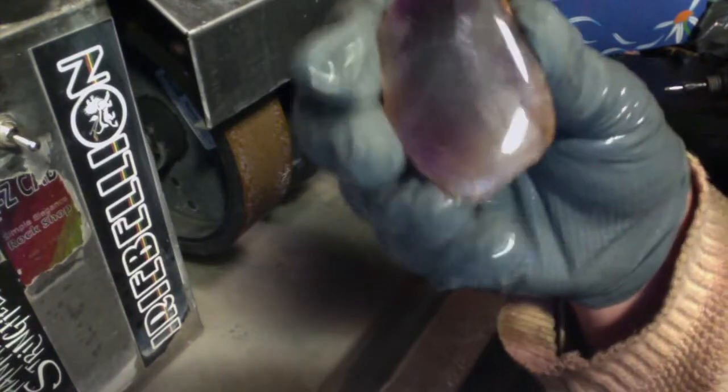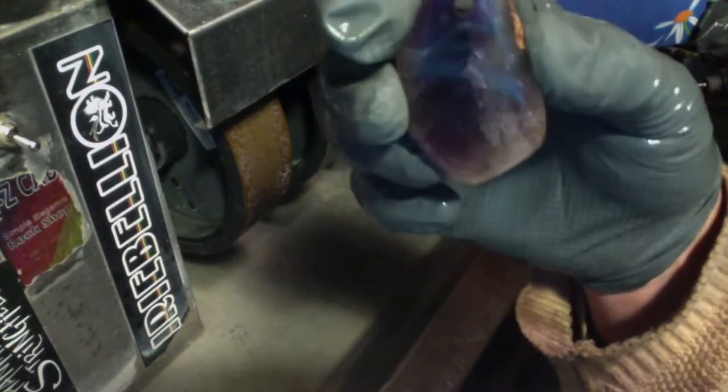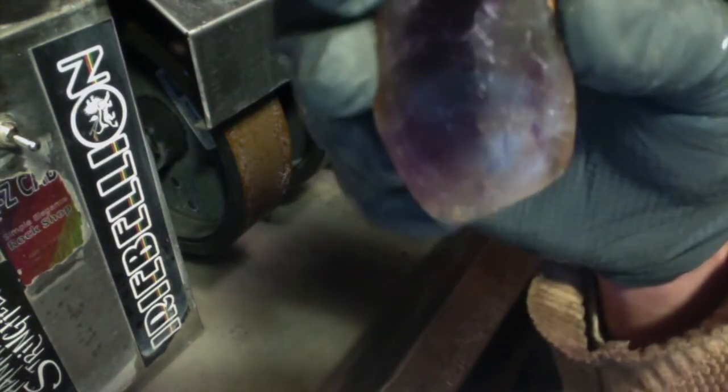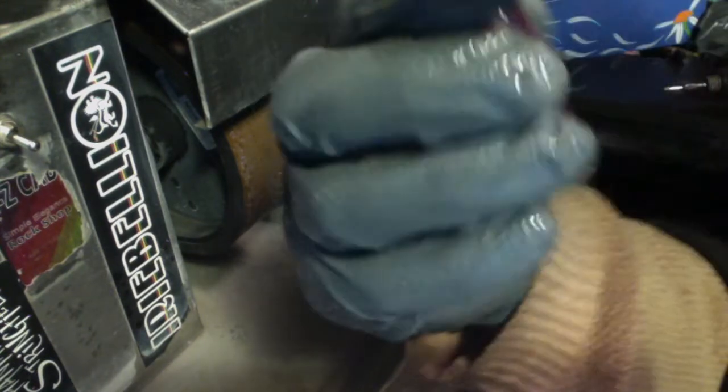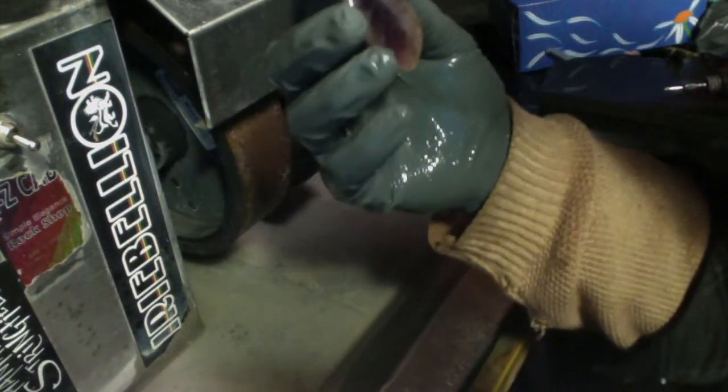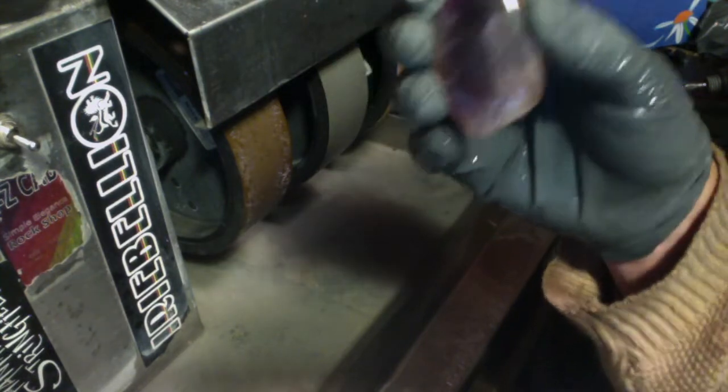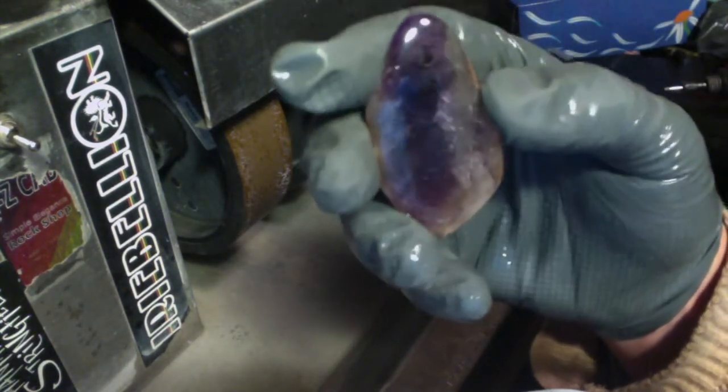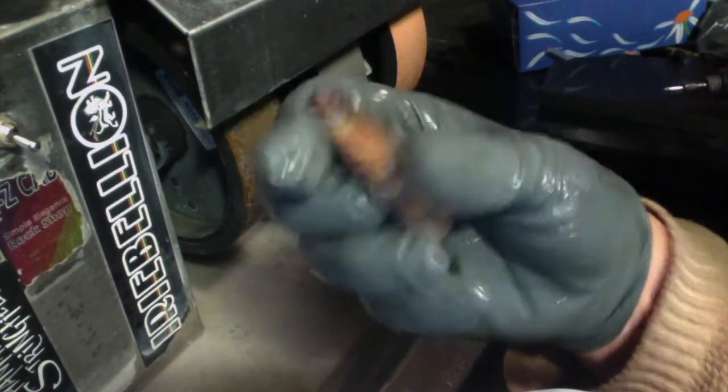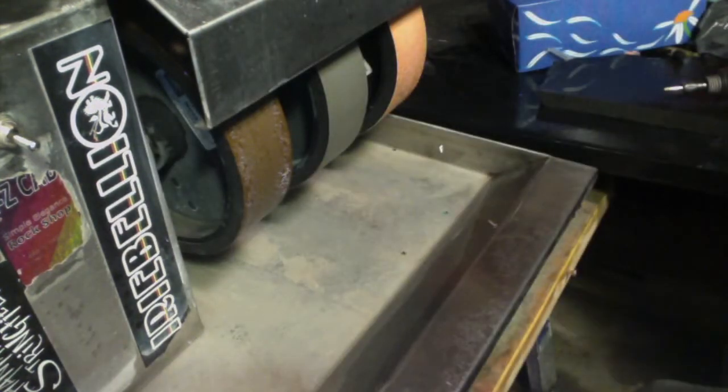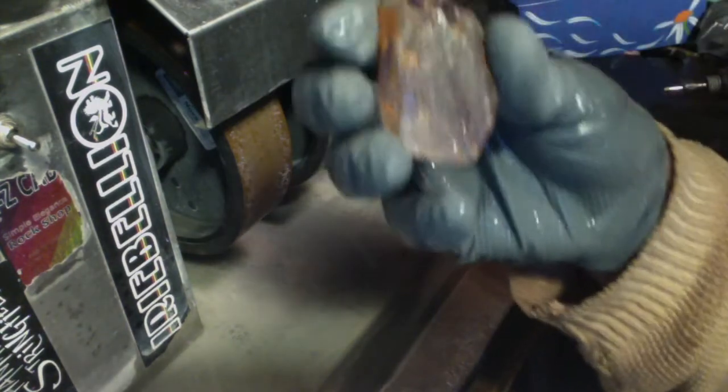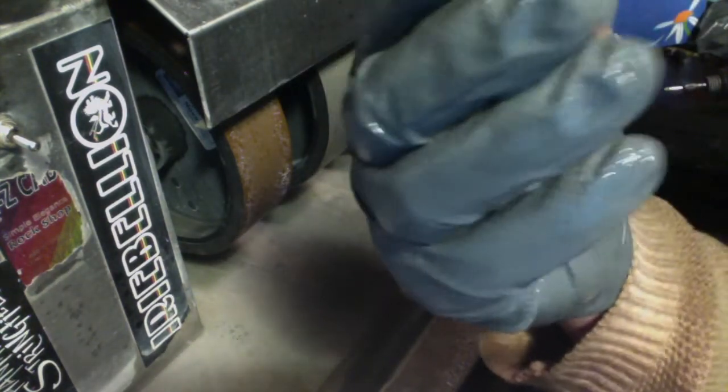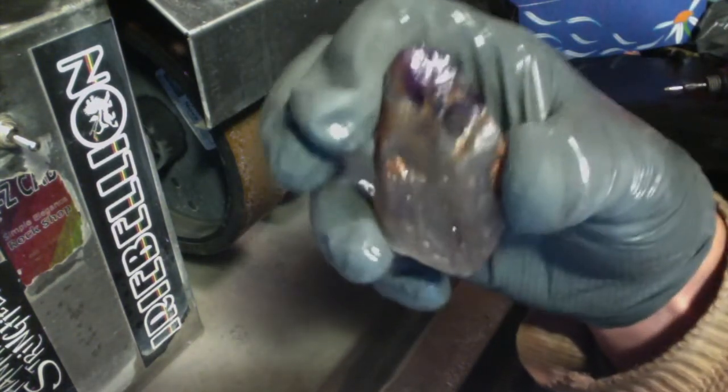All righty, folks. This is my 3000 grit polish. Looking fantastic. On this camera, you can almost see the orange coming through. To my naked eye, it is glowing orange from the face. Yes. This came out fantastic. The back takes a lot longer to dry, because it's rough. But that side looks fantastic, too.